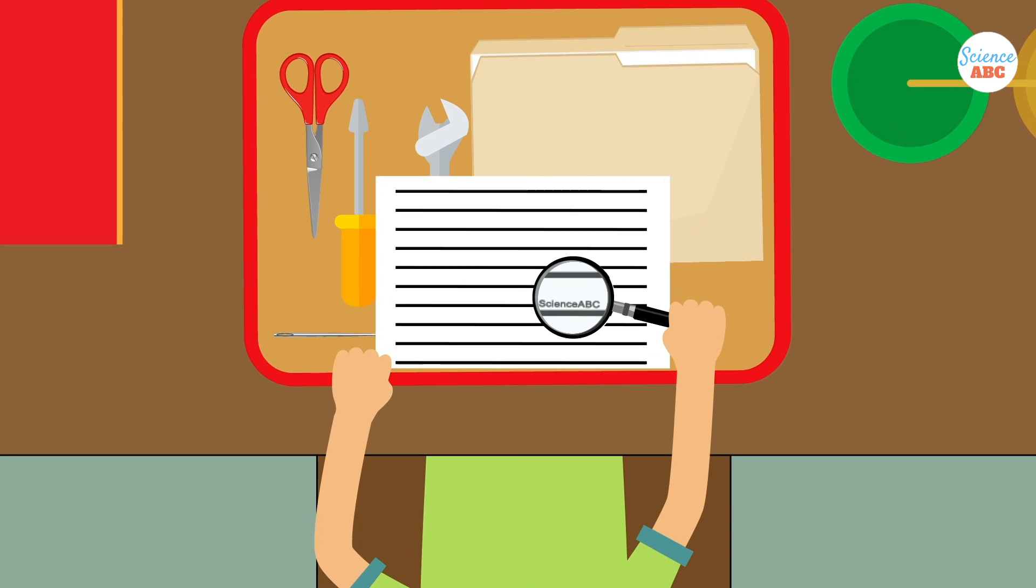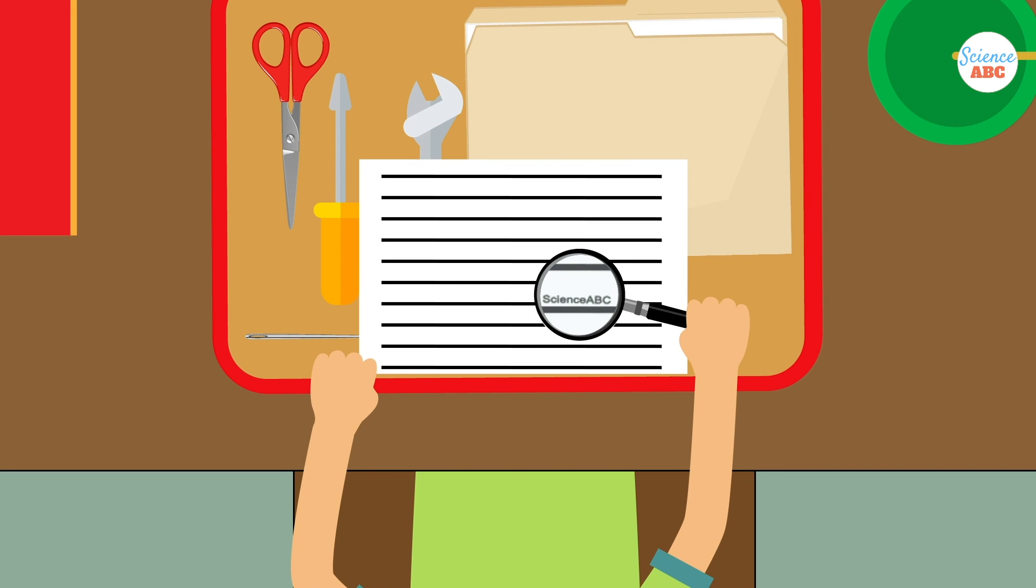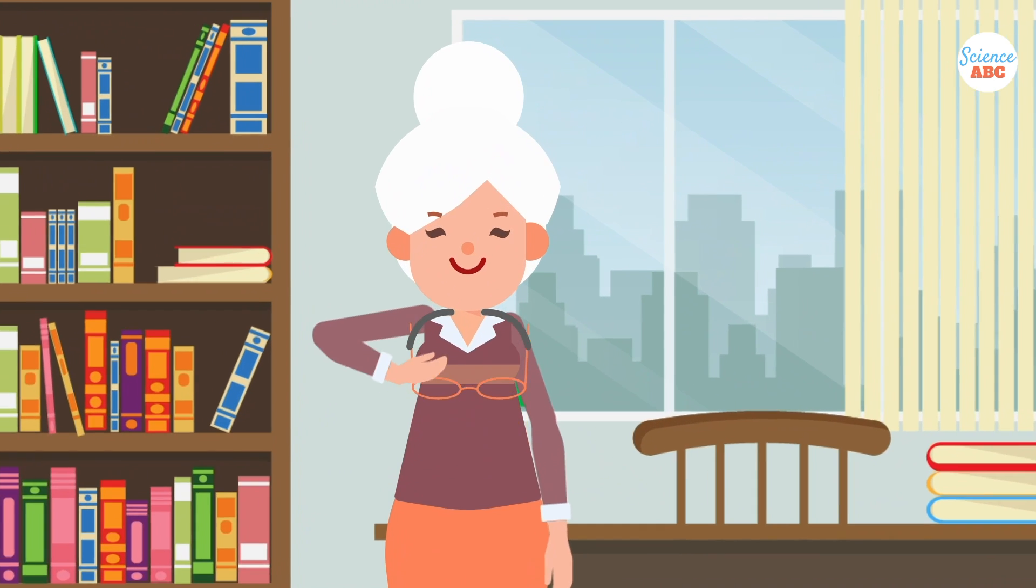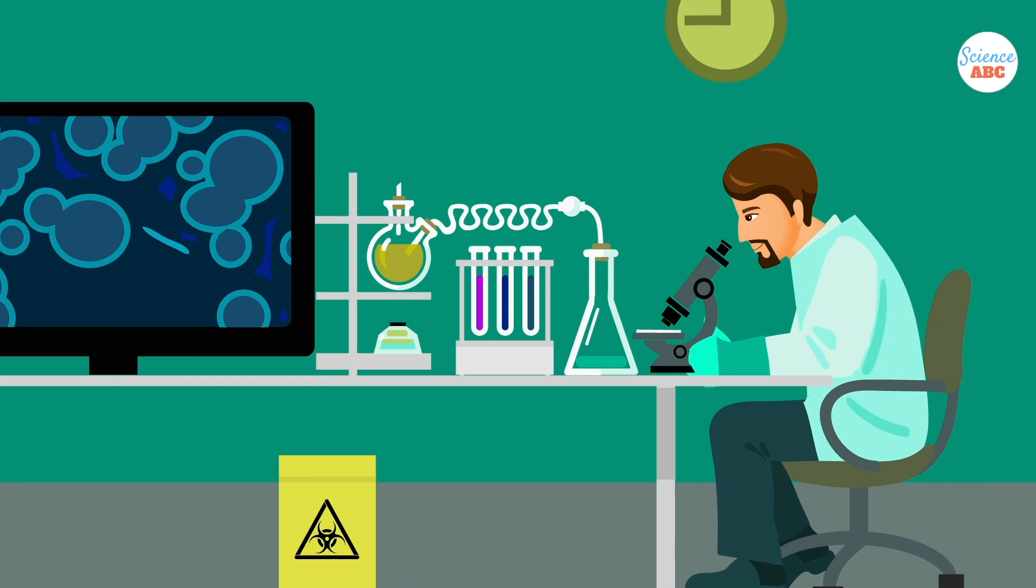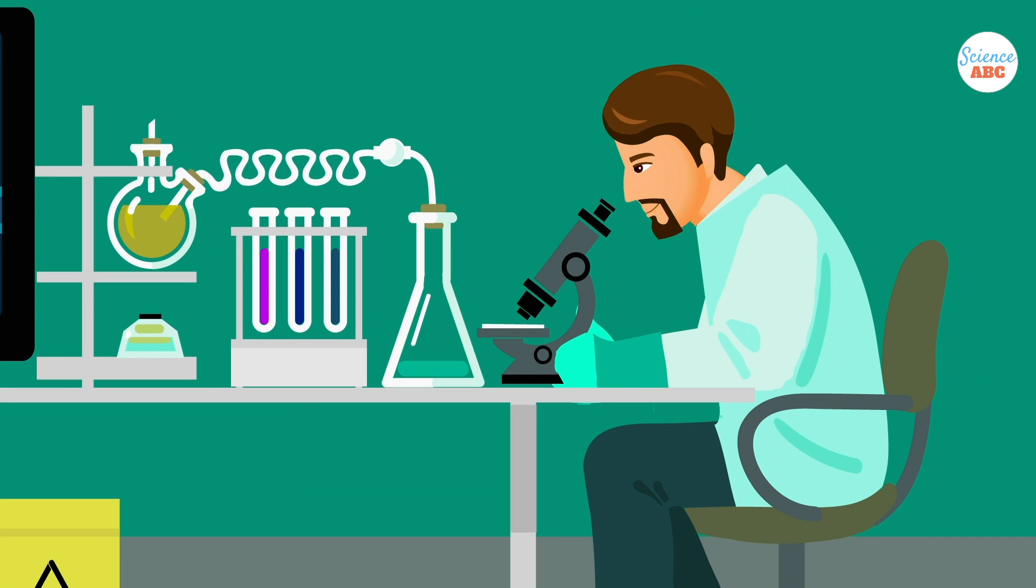The magnifying glass that you use to read tiny text is a lens. The glasses your grandma wears to recognize her neighbors is a lens. And the microscope used by biologists to study cellular bodies is also a type of lens.